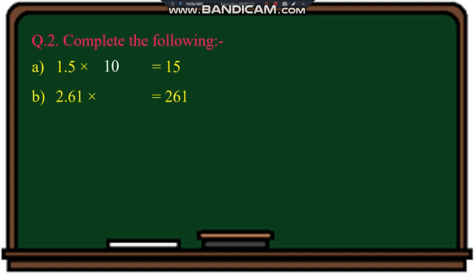2.61 into dash equals to 261. In the product we don't have any decimal, which means the decimal is shifted two places. Two places means two zeros — the answer is hundred. Again: 14.326 into dash equals to 14326. We don't have any decimal in the product — that is three zeros — meaning we multiplied by thousand.